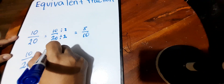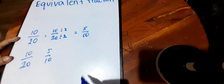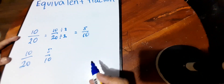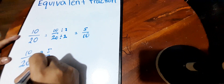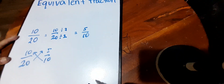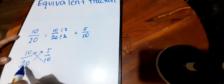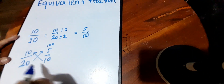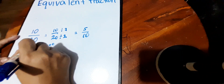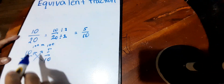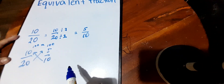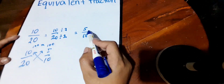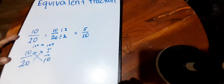Now let's check if they are really equivalent fractions by cross multiplying — when we cross multiply, they get the same product. So twenty times five is one hundred. Ten times ten is one hundred. Since their product is equal, then ten over twenty and five over ten is an equivalent fraction.